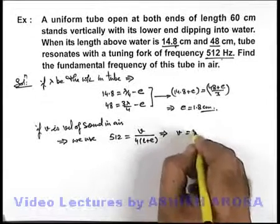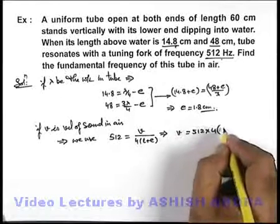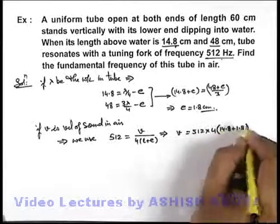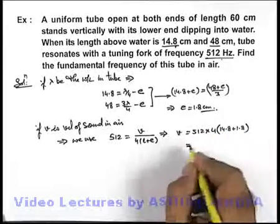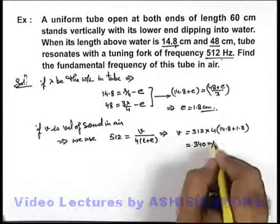v is equal to 512 multiplied by 4 into 14.8 plus 1.8. On solving this we'll get the speed will be 340 meters per second.